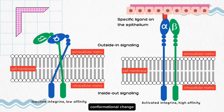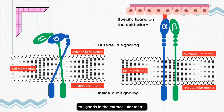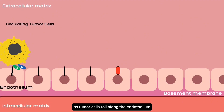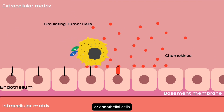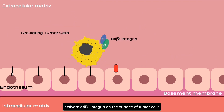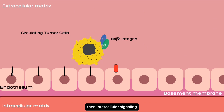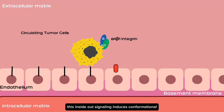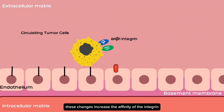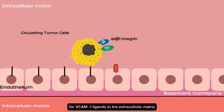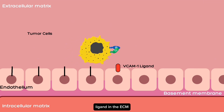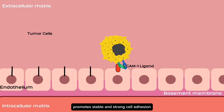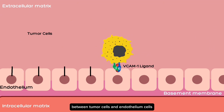The activation of integrins involves a conformational change, enabling them to extend and selectively bind to ligands in the extracellular matrix. As tumor cells roll along the endothelium, chemokines activate A4B1 integrin on the surface of tumor cells, triggering intracellular signaling such as FAK within the tumor cells. This inside-out signaling induces conformational changes in the integrin molecules, increasing the affinity of integrins for VCAM-1 ligands in the extracellular matrix. Activated integrins can then effectively bind to VCAM-1 ligands, promoting stable and strong cell adhesion between tumor cells and endothelial cells.